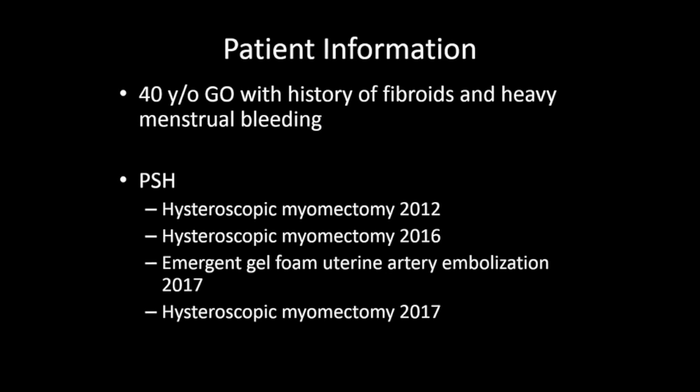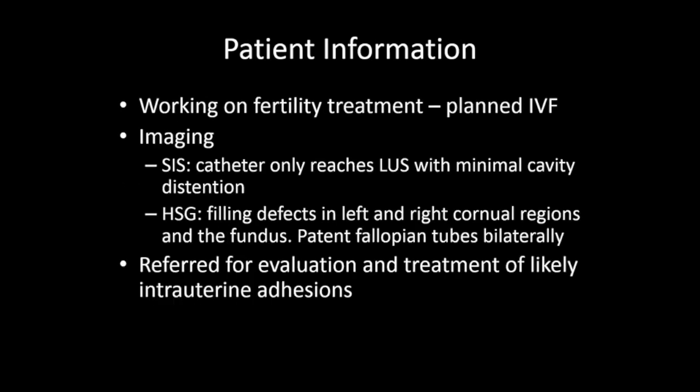Our patient is a 40-year-old nulliparous female with a history of fibroids and heavy menstrual bleeding. She's had three prior hysteroscopic myomectomies as well as a uterine artery embolization. She's planning on IVF, and her HSG and SIS findings were consistent with intrauterine adhesions.